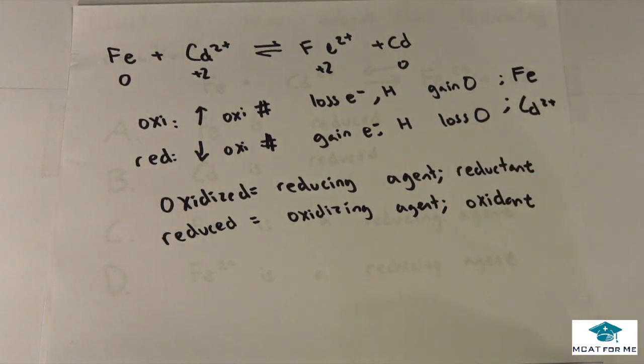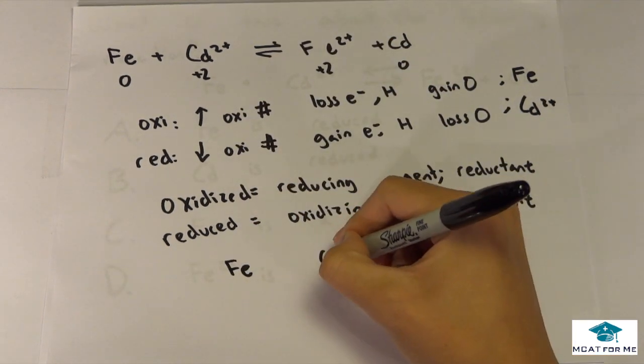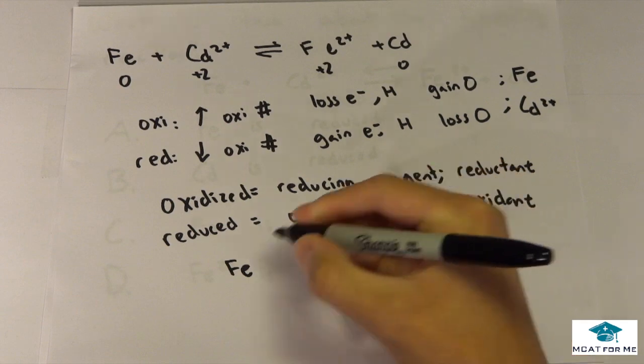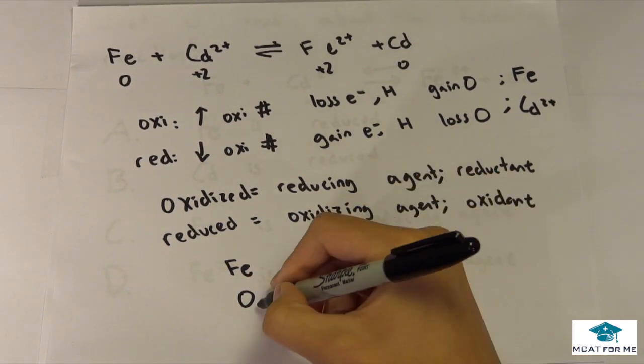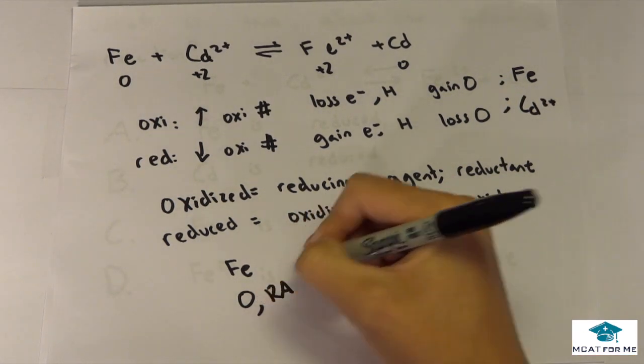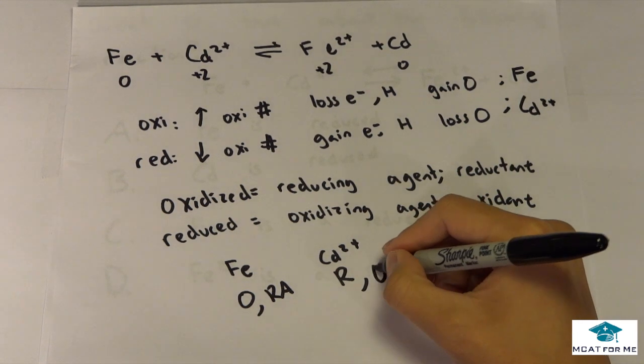So in this example Fe is oxidized so Fe and Cd two plus is reduced so that means Fe is also the reducing agent we'll call that RA and Cd two plus is reduced so it's also the oxidizing agent so we'll call that OR.